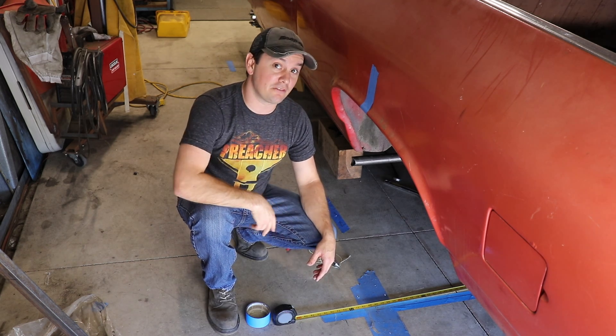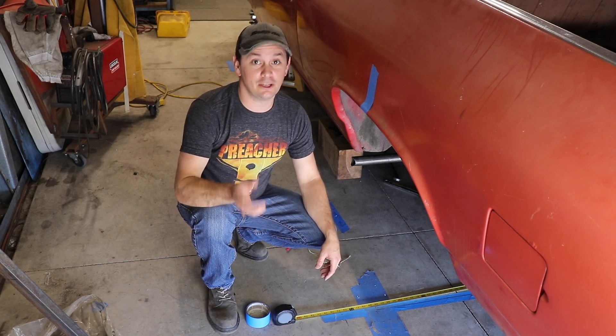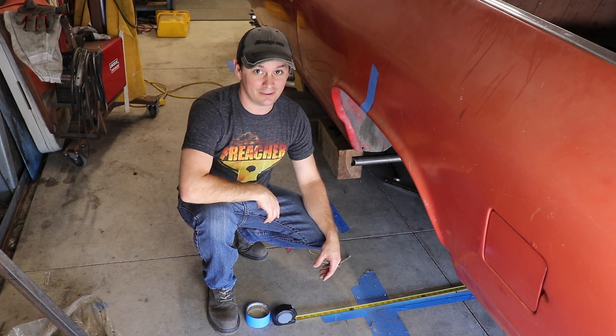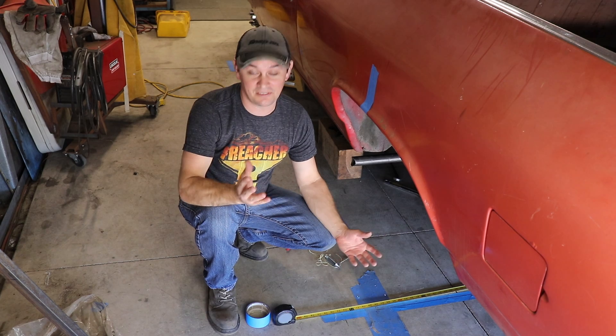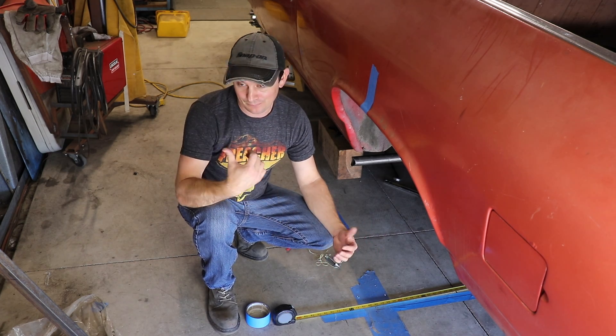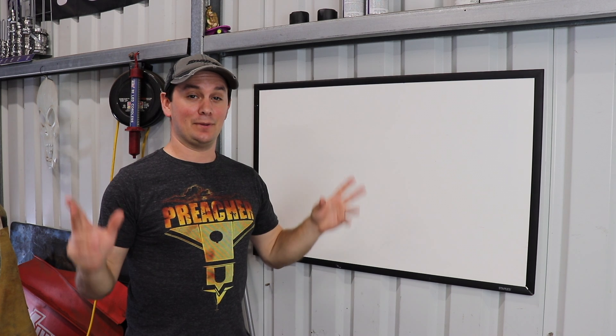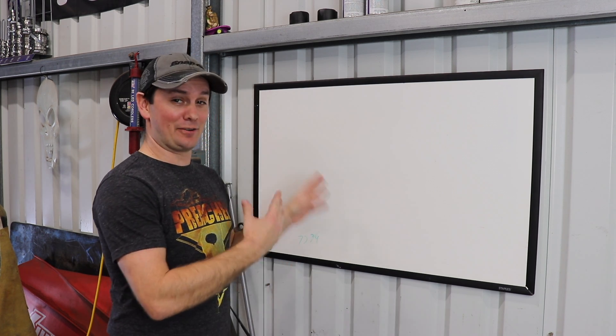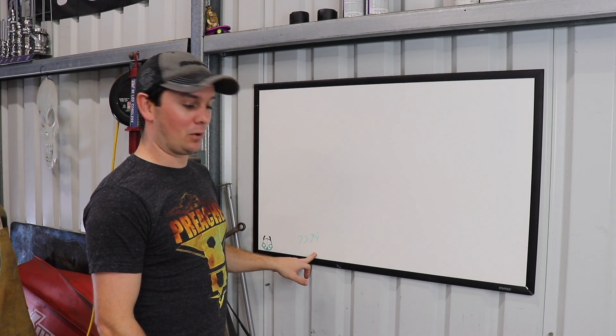You only need two things to really figure this out. You need that number, and then you need to figure out what tire you want to run. So now that I know that, obviously, I already know what tire I run. You can go to the whiteboard. I can show you how to do this. Okay, here I am at the whiteboard. We have our number. It's 73 and 3 quarters.